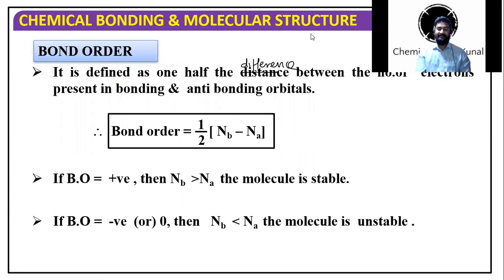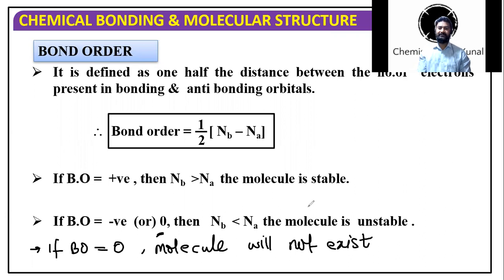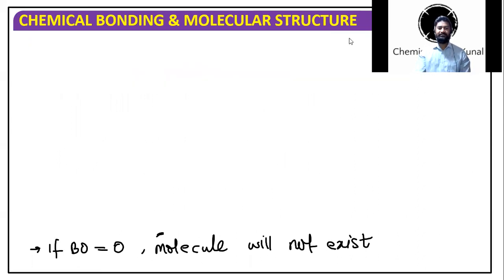And if bond order comes out to be zero, then the molecule will not exist. So this is how we can do questions. Now, how about questions and what kind of questions are asked? Let's understand that and do them. So we'll go ahead and see how we can do the questions.